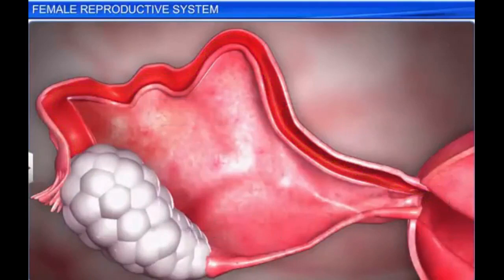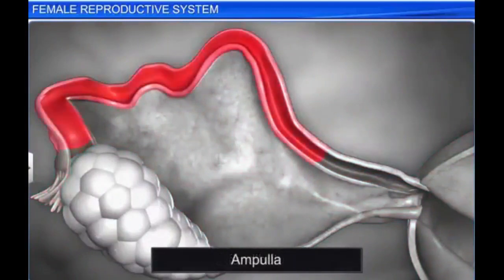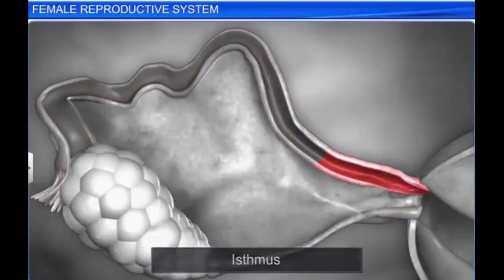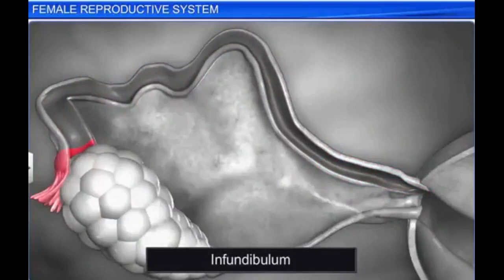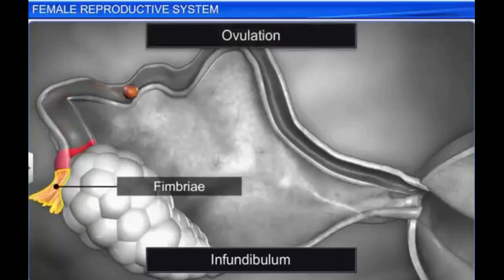Each oviduct is differentiated into 3 parts: the infundibulum, ampulla, and isthmus. The infundibulum is a dilated funnel close to the ovary, and its edges are surrounded by finger-like projections called the fimbriae. They help collect and push the ovum into the oviduct after ovulation.